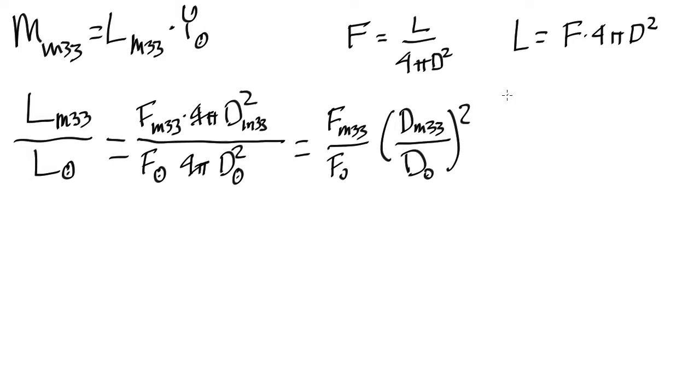Now let's look at these numbers. If we go out and we see how bright the sun is compared to M33, it turns out the observed flux of the sun is equal to 10 to the 13 times the flux of M33.